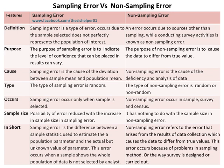In short, sampling error is the difference between a sample statistic used to estimate the population parameter and the actual but unknown value of the parameter. This error occurs when a sample that shows the whole population of data is not selected by the analyst. Whereas non-sampling error refers to the error that arises from the results of data collection, which causes the data to differ from true values. This error occurs because of problems in the sampling method or the way a survey is designed or carried out.